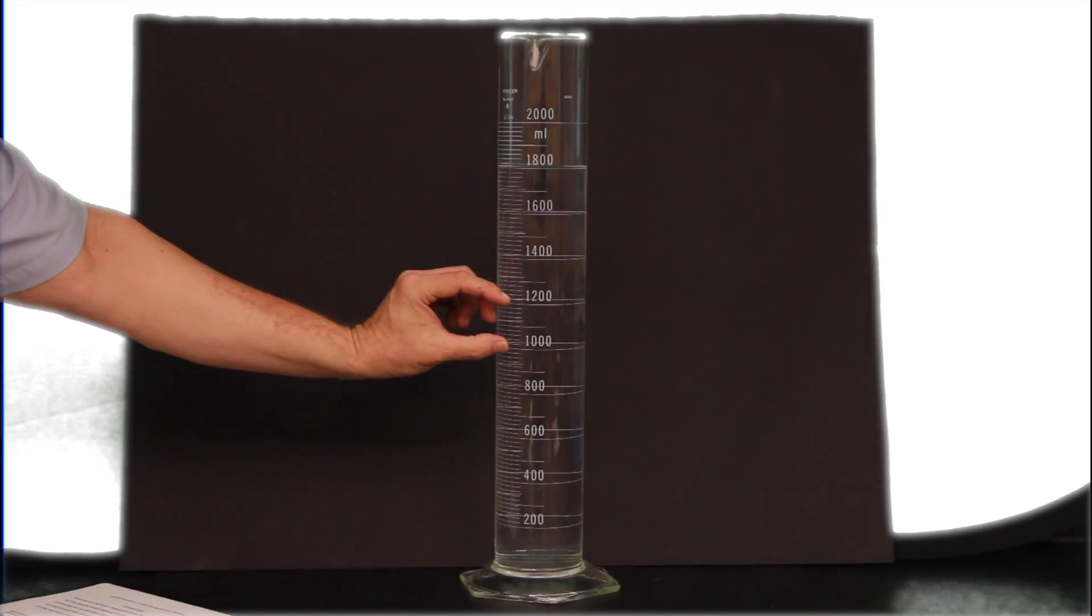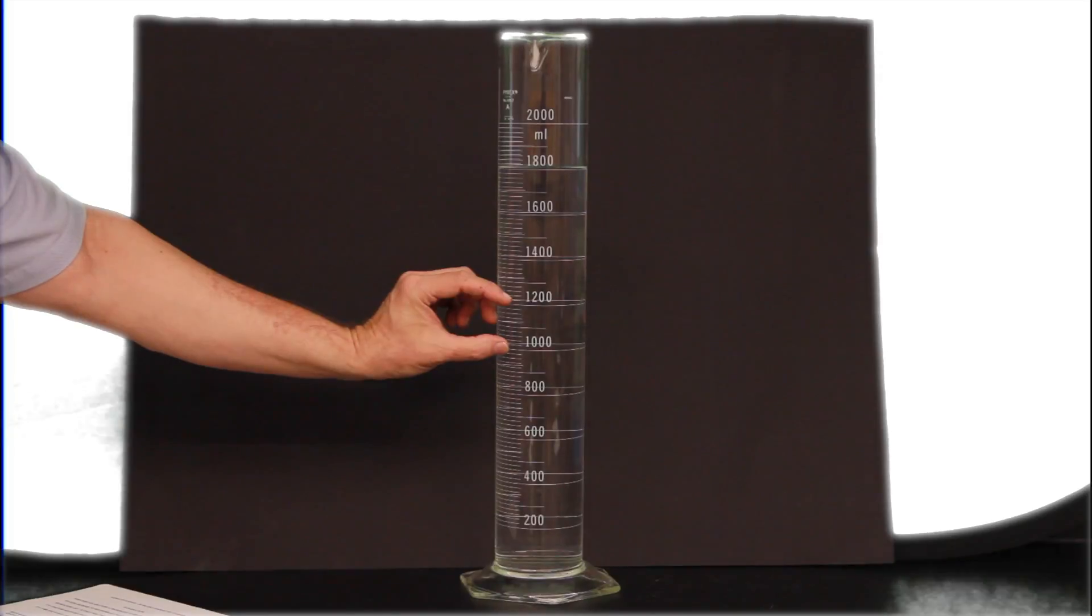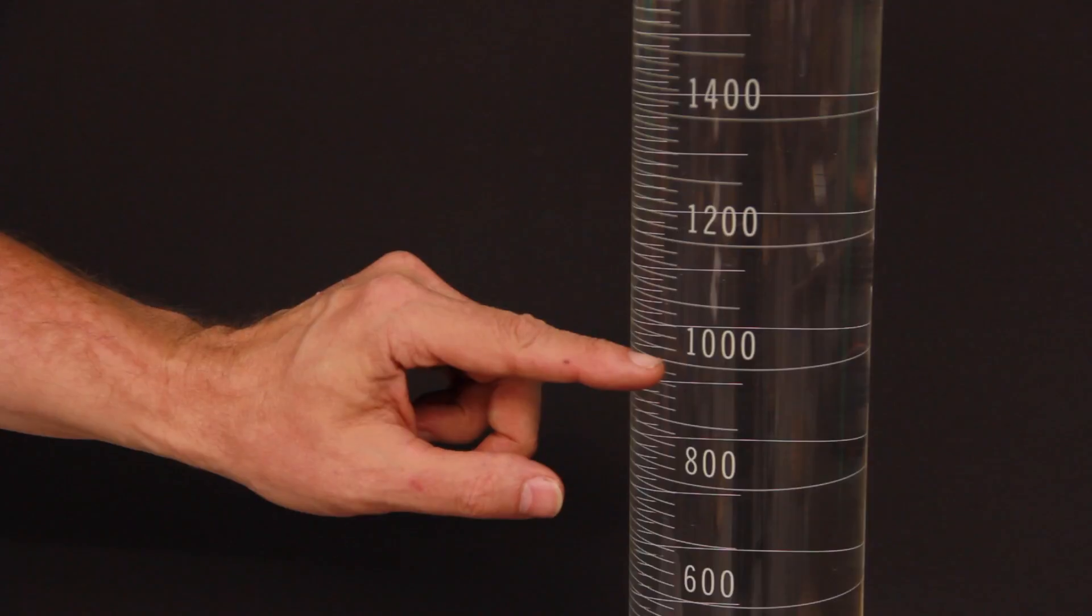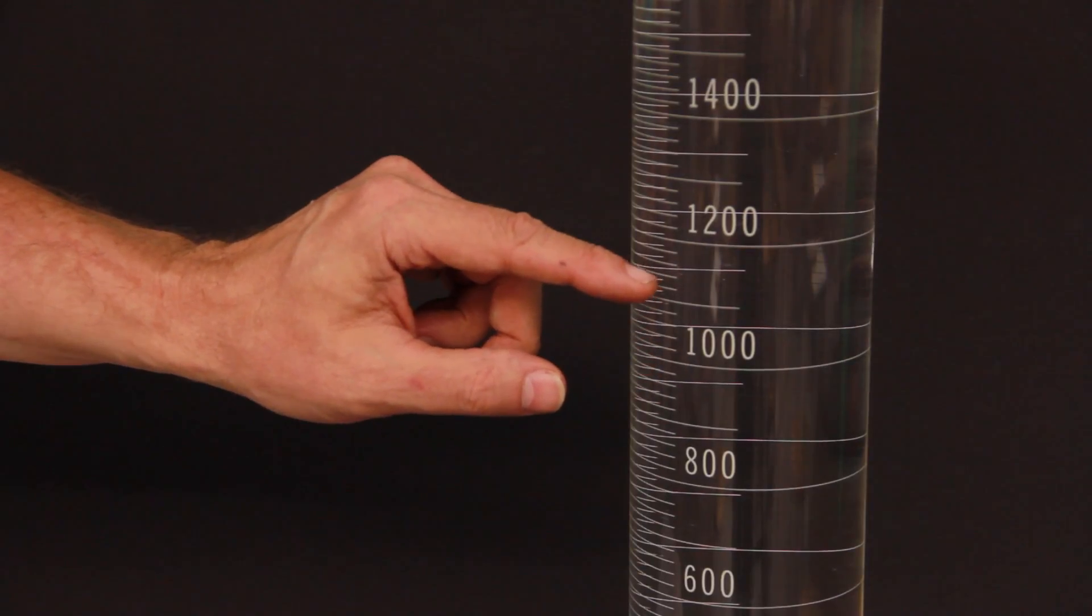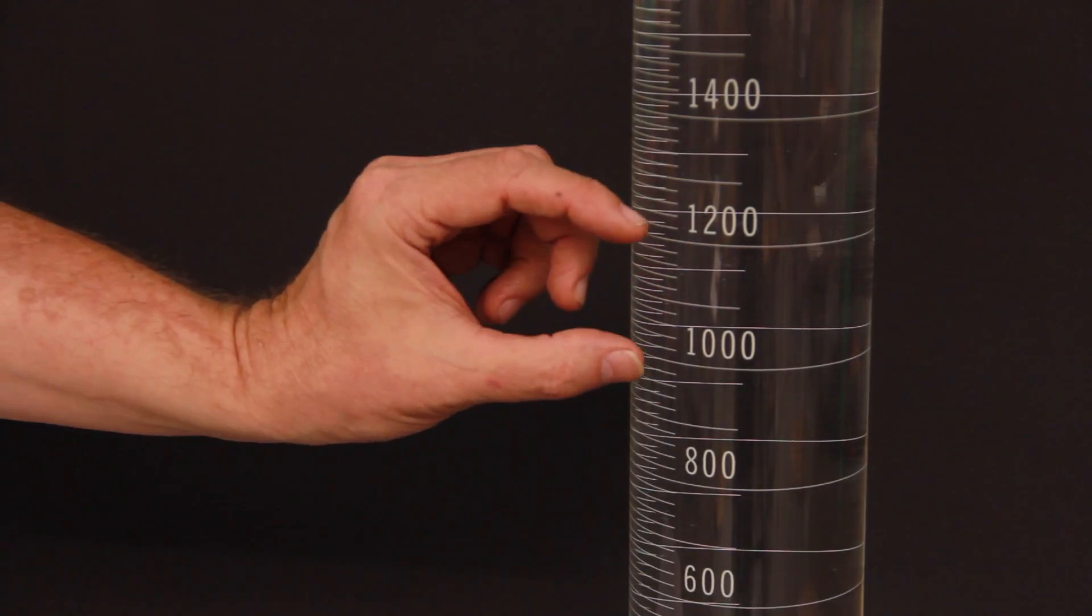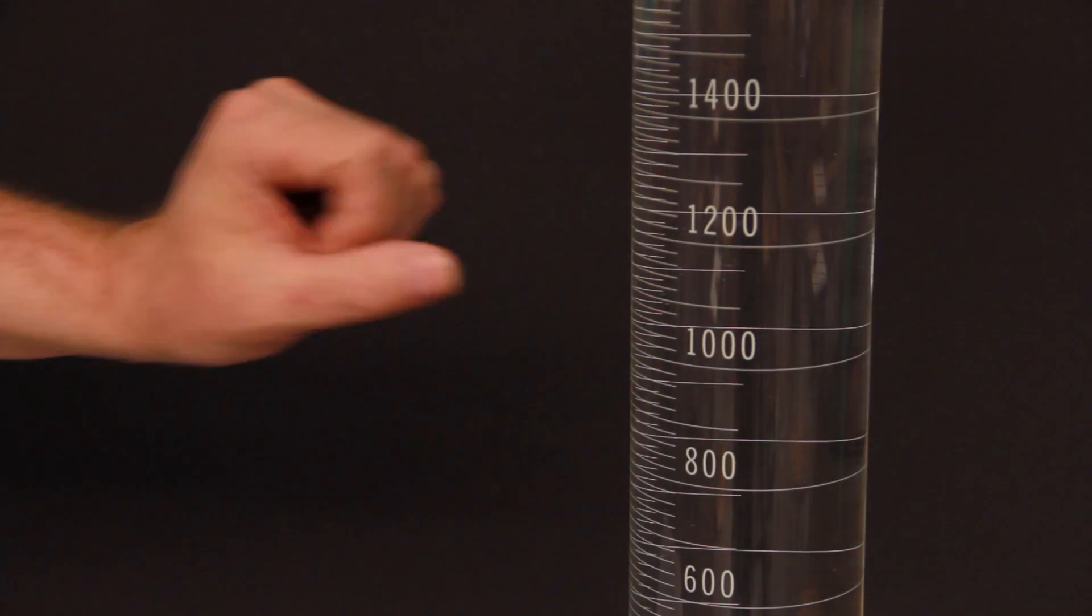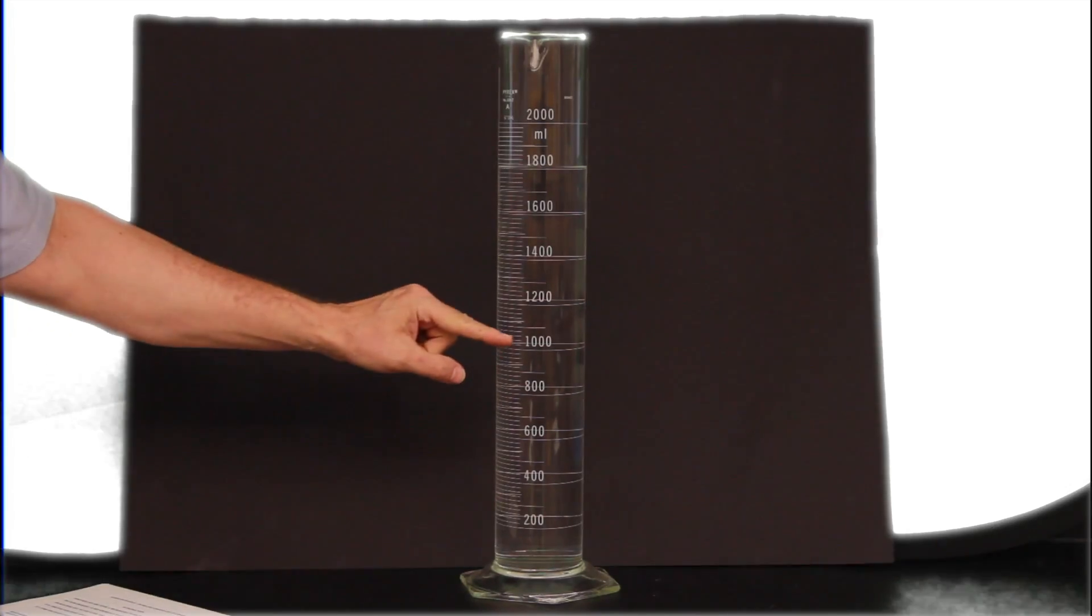To determine what an individual line means on the graduated cylinder, you first need to find two numbers side by side on the cylinder. Starting at the lower number, count how many lines it takes to get to the larger number. Then, get the difference between the two numbers. Divide the difference by the number of lines you have counted. This will tell you how many milliliters each line represents.